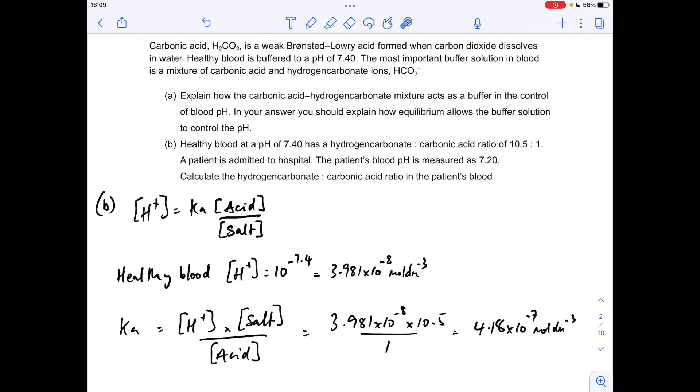Now we can feed that back into the calculation for the patient's blood. Remember, the patient's blood is pH 7.2, and we can get the salt to acid concentration from that.